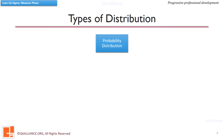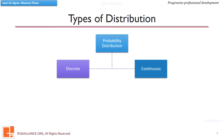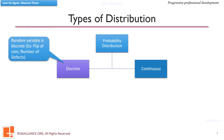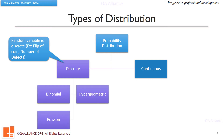Probability distributions can be categorized as discrete or continuous probability distributions. Discrete distributions are when the random variable is discrete. For example, flip of a coin or number of defects. Common distributions in this category are Binomial, Hypergeometric, and Poisson.